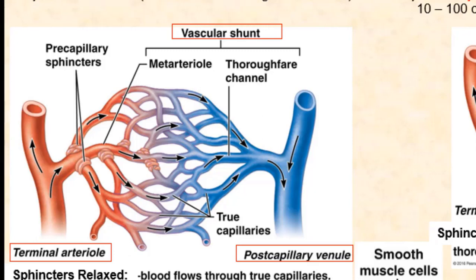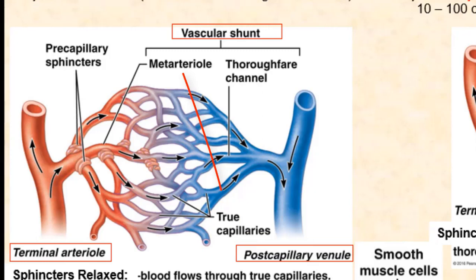The second route of blood flow consists of a meta arteriole to the true capillaries. It is at the true capillaries where exchange of materials, substances, and gases can occur. Should blood go through these true capillaries, we can have the exchange between blood and the tissue cells — basically capillary exchange. Blood flows from meta arteriole to true capillaries to post capillary venule.